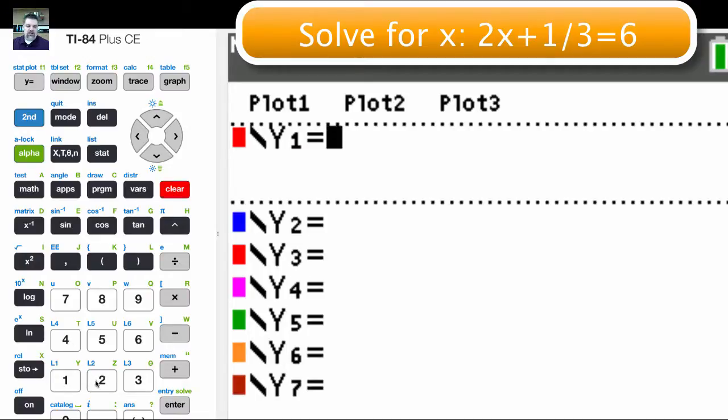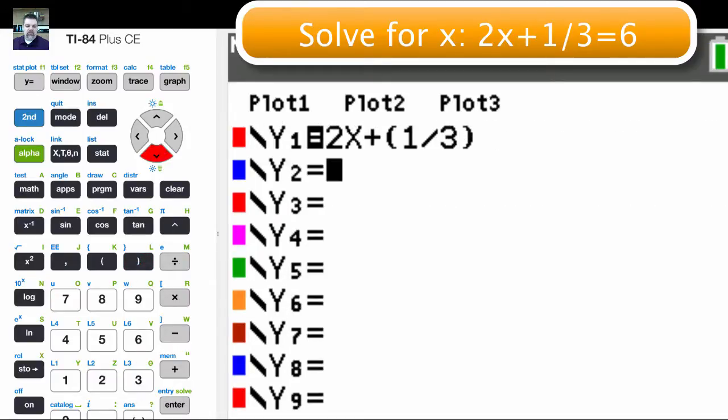One way you could double check your equation is to take the left hand side of the equal sign, which is 2x plus, and then in parentheses put 1 divided by 3. And then the right hand side of the equal sign, which is just 6, and graph both of those.